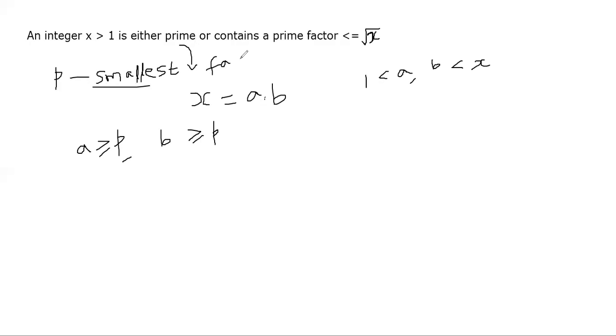So how do we now proceed further to show that the smallest factor of the number x is bounded by square root of x? Now let's multiply these two things. When a is greater than or equal to p, b is greater than or equal to p, what can we say? We can say a times b must be greater than or equal to p square. What is a times b? a times b is nothing but x because that's the assumption here.